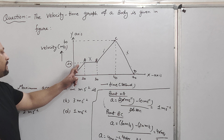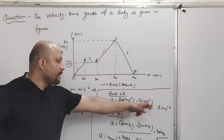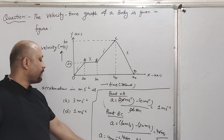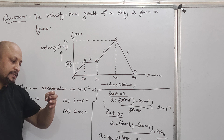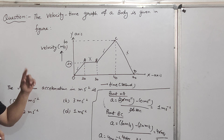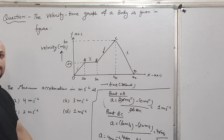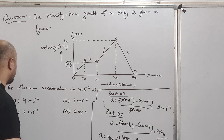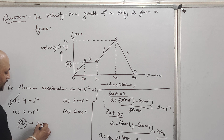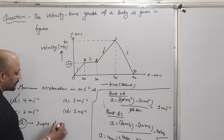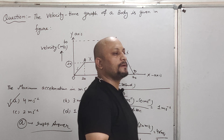So I have seen two parts: OA and BC. OA has acceleration of 1 meter per second square and BC has acceleration of 4 meters per second square. BC is the maximum acceleration part, which is 4 meters per second square. So the right answer is option A — 4 meters per second square.